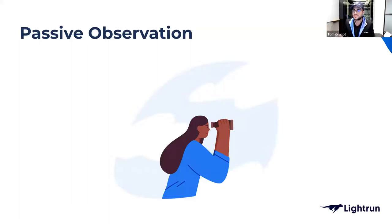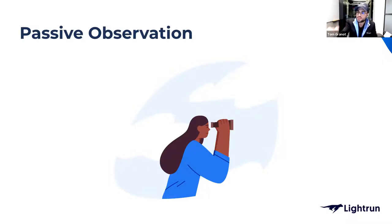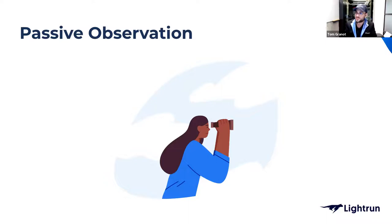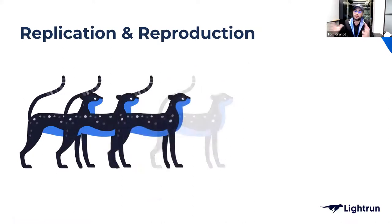The problem with passive observation is it's limited to the left side of the SDLC. On the left, developers decide what to log, instrument, measure, and trace. Once deployed to production, you're stuck with the information you defined — you can't change it midway. This often leaves missing pieces: 'I wish I had that log line there,' or 'I wish I added that metric there.'